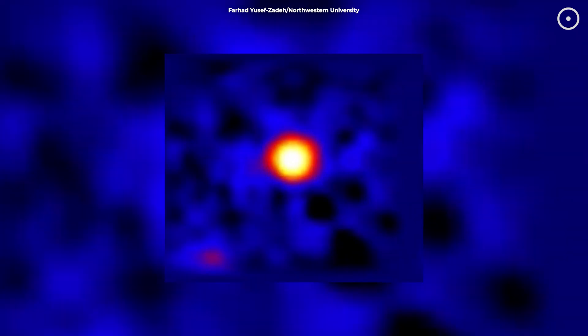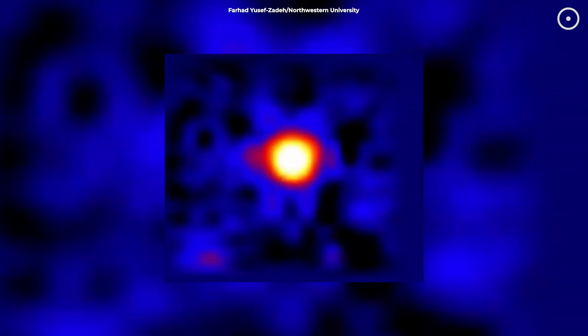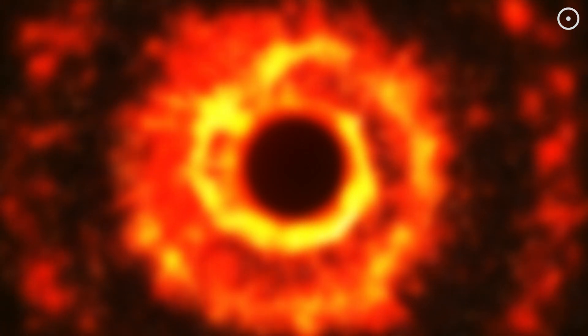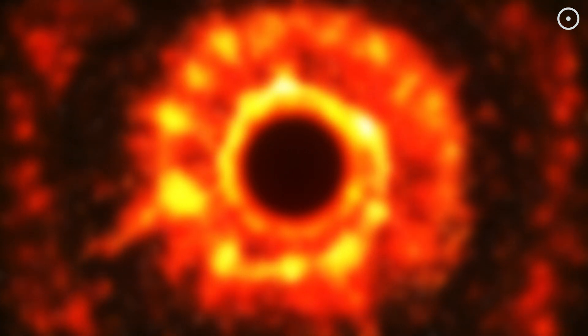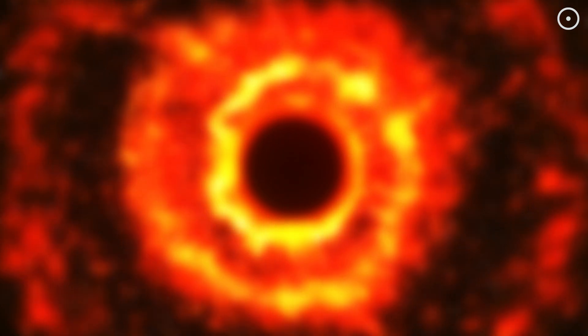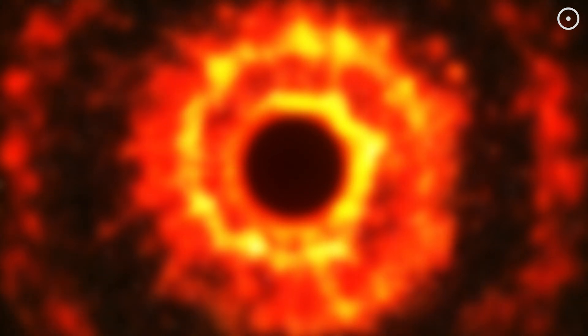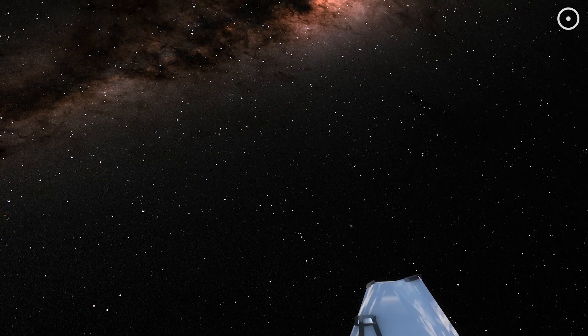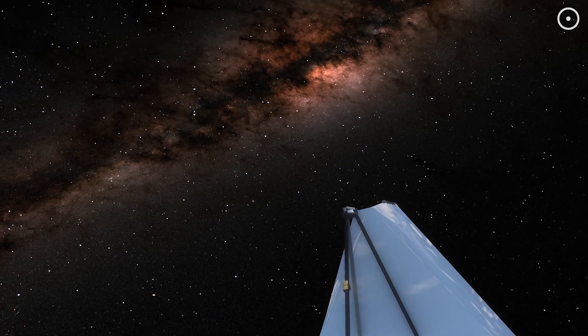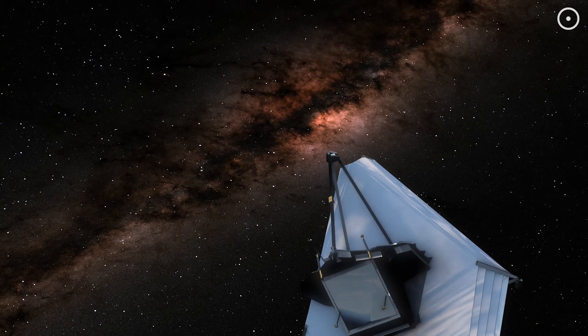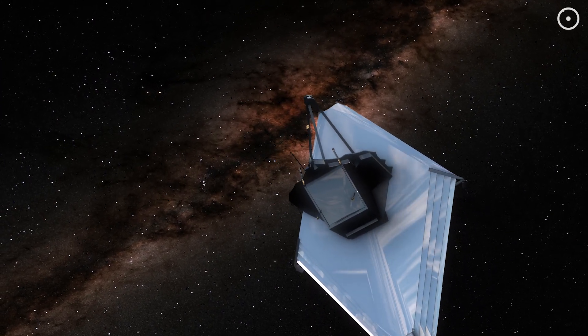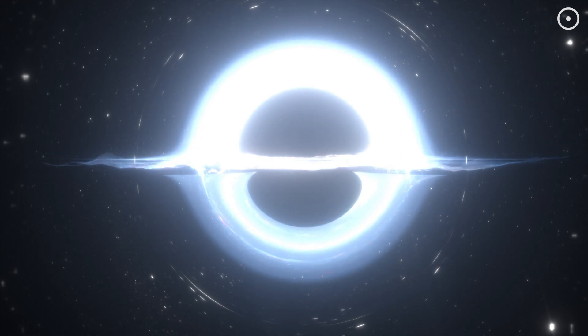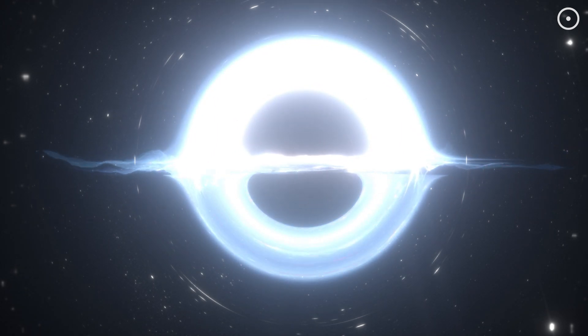These aren't actual visible light shows—they're infrared emissions that Webb can detect. And unlike anything we've seen before, these observations revealed something fascinating about how black holes interact with their surroundings. What Webb discovered isn't just one type of light show. It's more like three different performances happening simultaneously, and each one tells us something unique about what's happening around this cosmic monster.